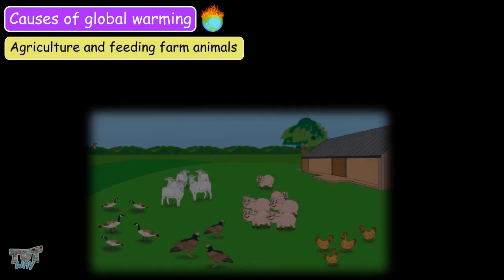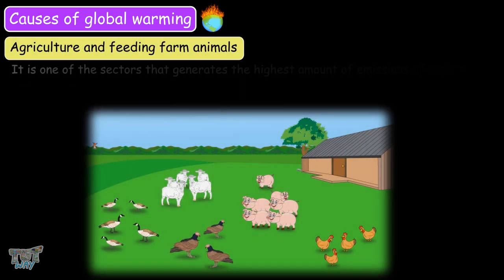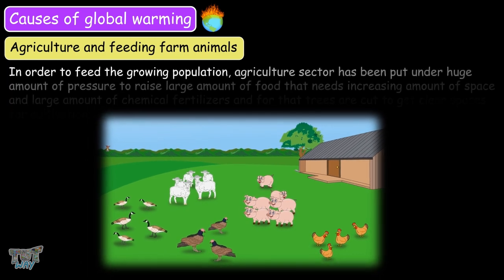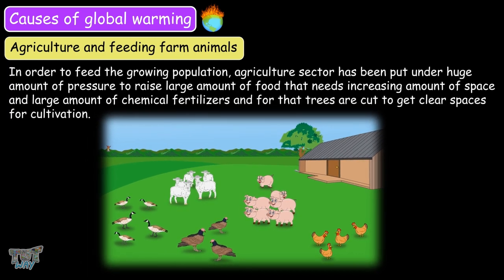Agriculture and feeding farm animals is also one of the sectors that generates the highest amount of emissions of carbon dioxide, which is a main greenhouse gas. In order to feed the growing population, the agriculture sector has been put under a huge amount of pressure to raise large amounts of food that needs an increasing amount of space and a large amount of chemical fertilizers, and for that trees are cut down to clear spaces for cultivation.